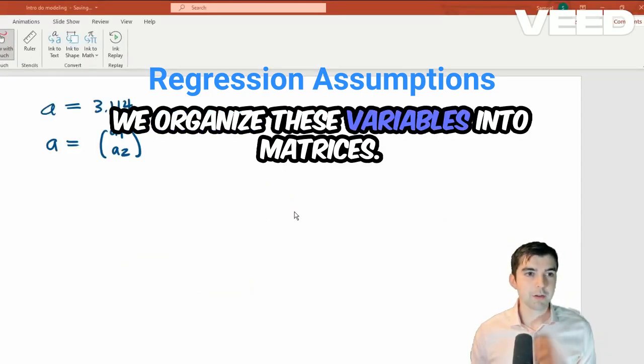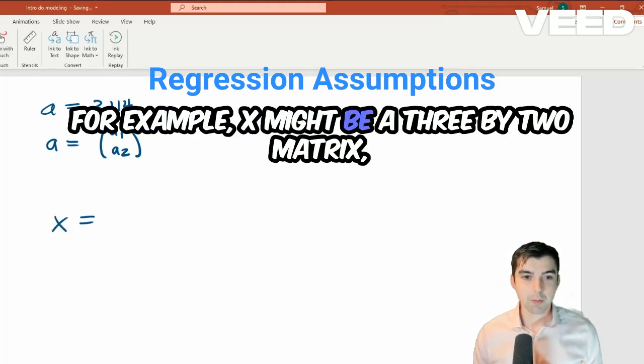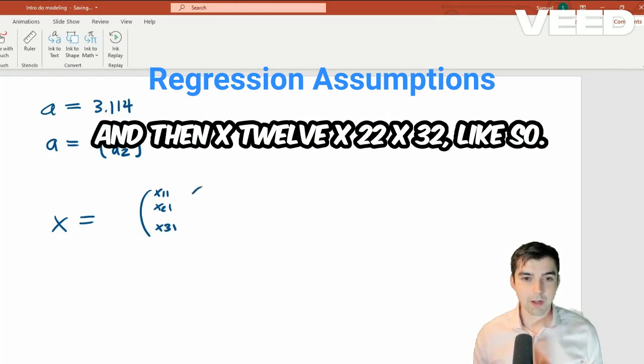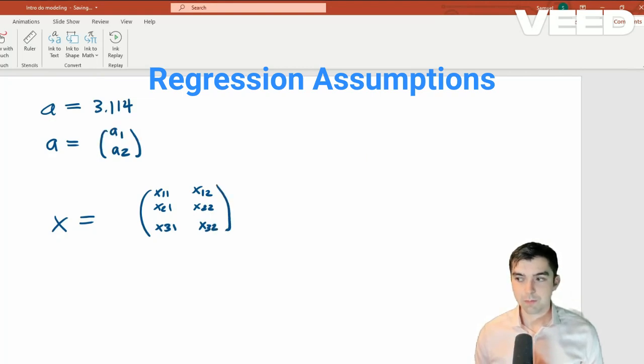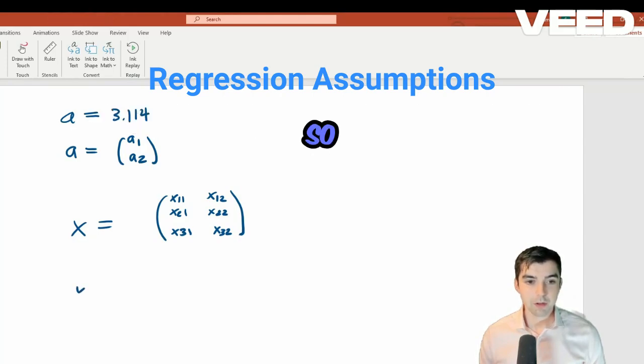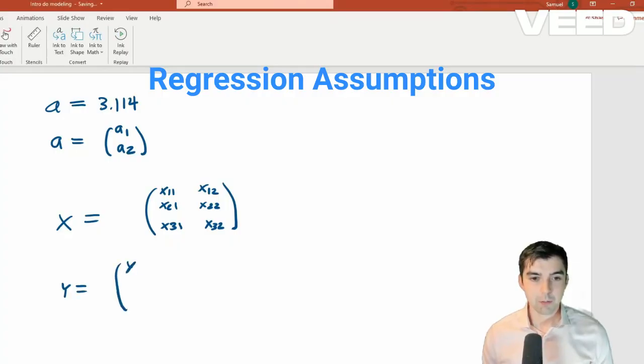We organize these variables into matrices. For example, x might be a 3 by 2 matrix. So it has x11, x21, x31, and then x12, x22, x32, like so. Our y variable is always the target value. So we would say that y would be y1, y2, y3.